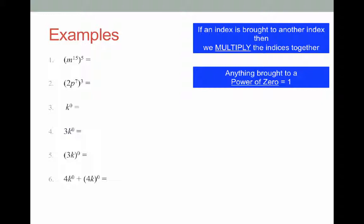Let's go. Question number one: m to the power of 15, to the power of 5. The rule is when we have a power of a power we multiply the powers together. 15 times 5 is 75, so the answer is m to the power of 75. That's as simplified as it gets.